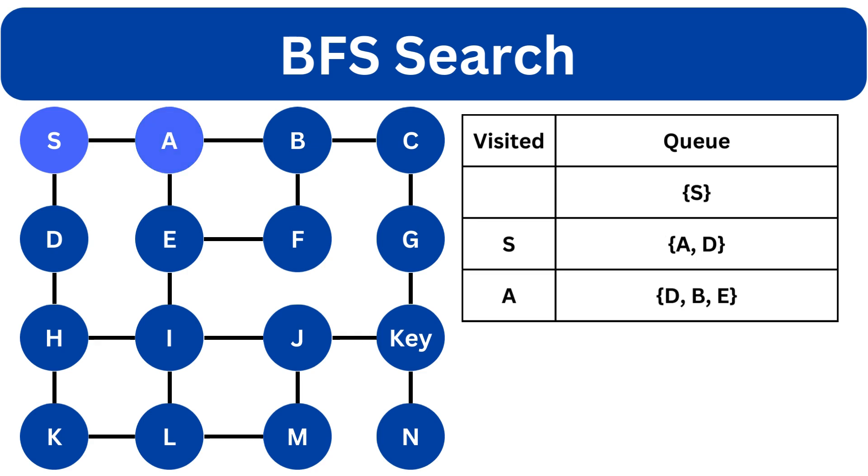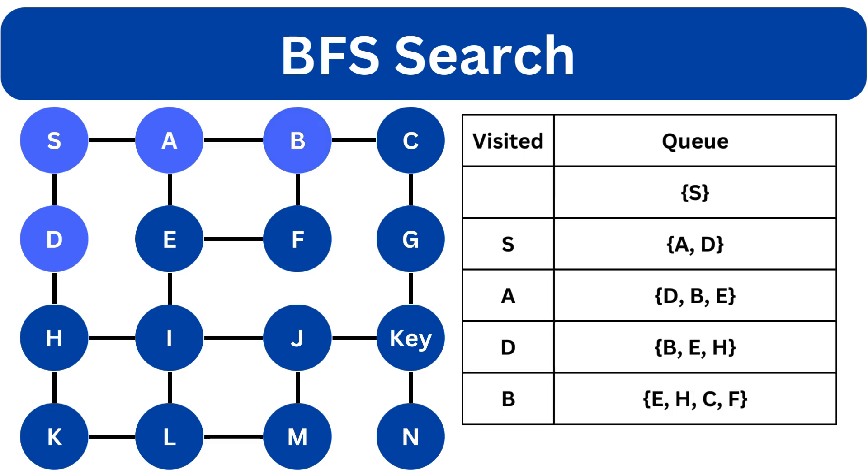We dequeue A. A is not a goal, so we will explore its neighbors that are B and E. We will append them at the end of the queue. The next node is D. D is not the goal. We explore the neighbor which is H and we will append it to the queue. We will dequeue the B node and we will add the neighbors of the B node, C and F, to the queue.